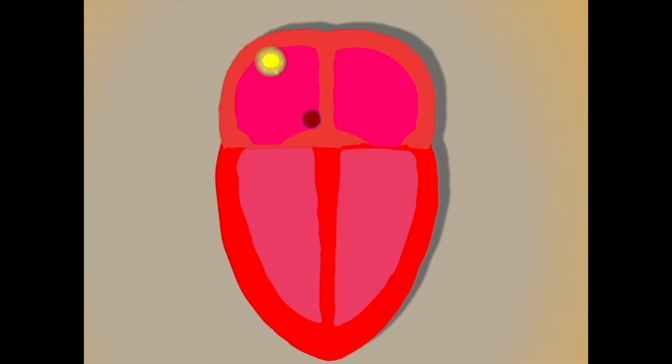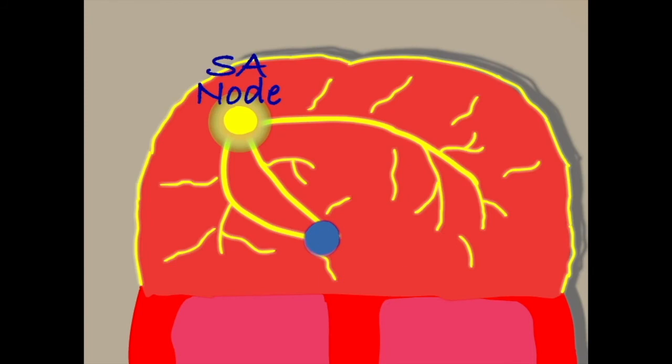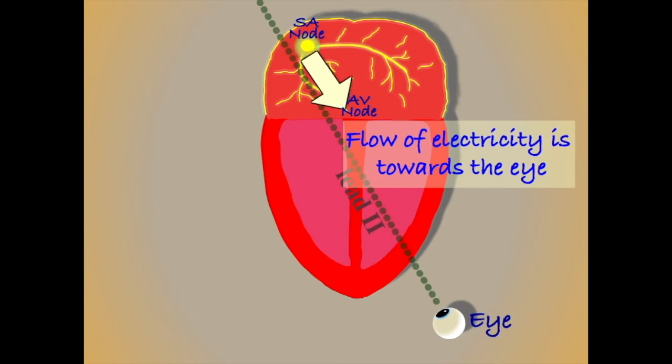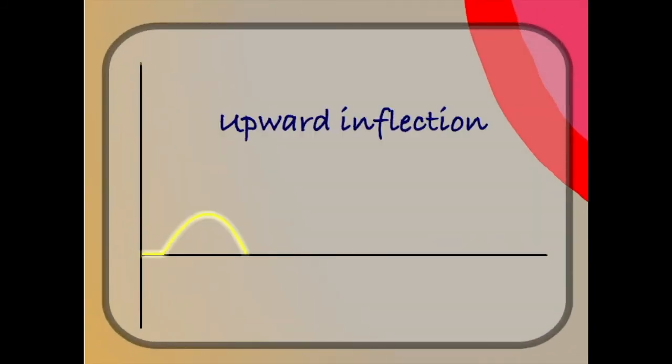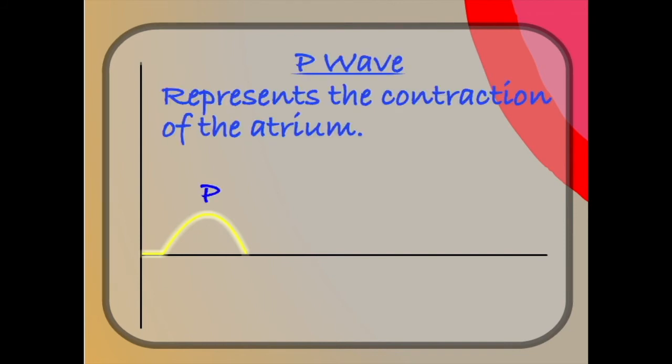The electrical impulse begins at the sinus node, from where it flows through the atrium and down towards the AV node. The flow of electricity is predominantly moving along our lead towards our imaginary eye. We therefore get an upward inflection on our ECG. We call this upward inflection the P wave. It represents the contraction of the atrium.